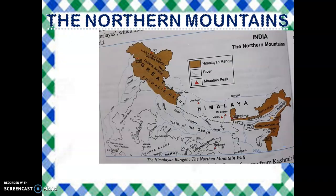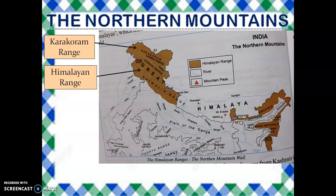The most striking physical feature of our country is the great mountain wall of the north. It separates the Indian subcontinent from the rest of Asia. The northern mountains include the mighty Himalayas and the adjoining Karakoram Range.